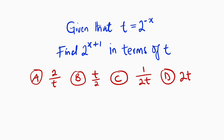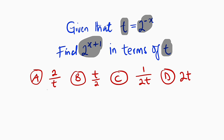Hello, good morning viewers. In this tutorial, we are going to find a solution to this multiple choice question. We are given that t is equal to 2 raised to the power of negative x, and we are asked to express 2 raised to the power of x plus 1 in terms of t, and we are given 4 options here. I am going to present you two methods, but the second method is said to be the simplest.